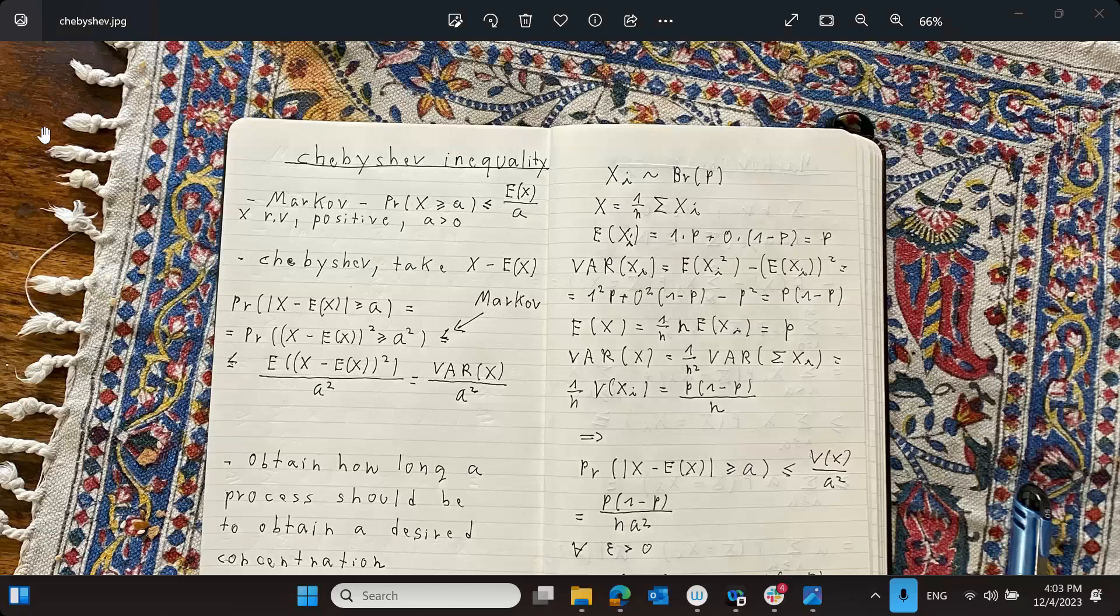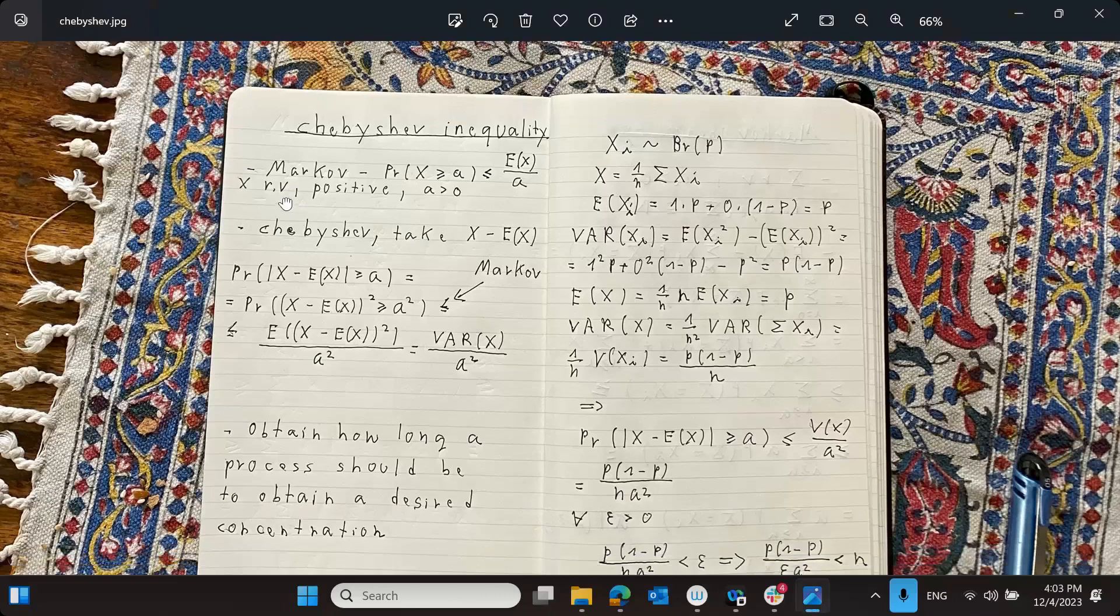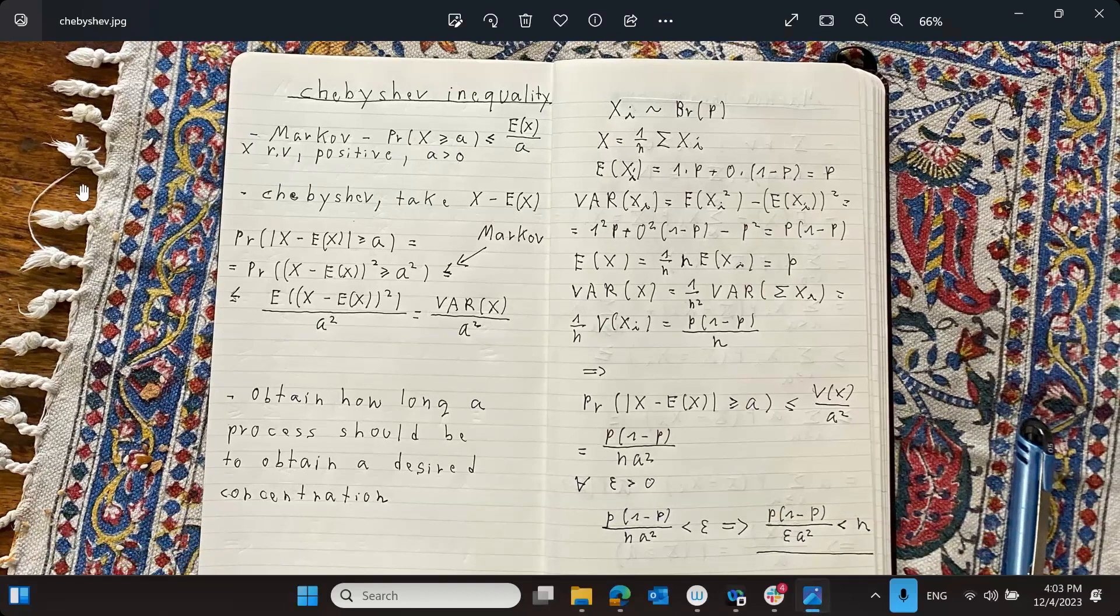And we're building off our previous discussion on the Markov inequality. So just to remind us, the Markov inequality applies when the random variable is positive, and given some number that is positive again, the probability of the random variable being bigger than that number is the expectation over that number. We talked about it in one of our previous meetings.